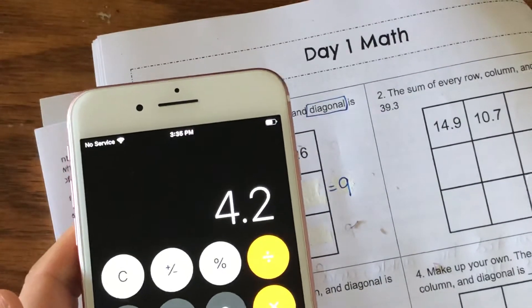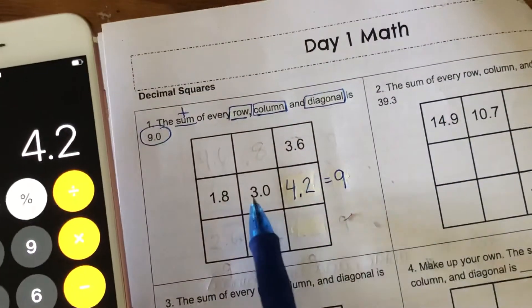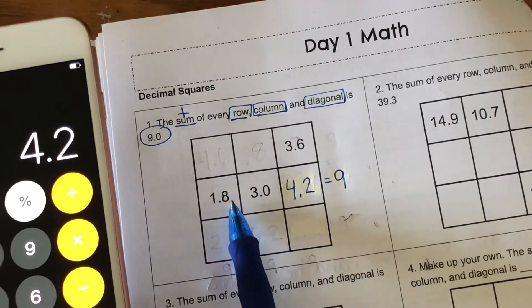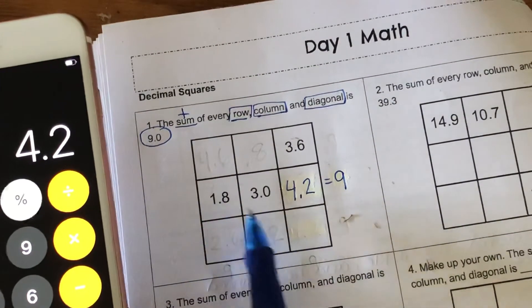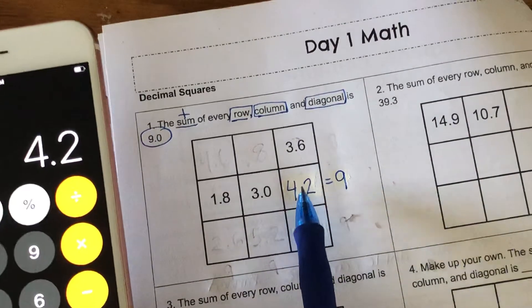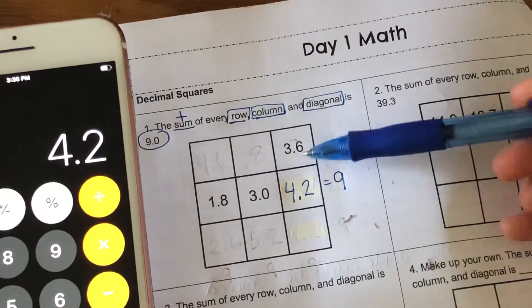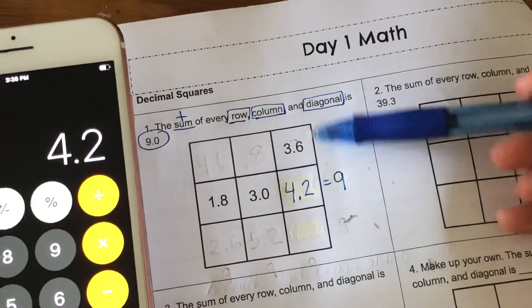I'm gonna go ahead and fill that in here, and I know that's correct because I added these two numbers together and took the sum of that away from 9 and got the difference. Now since I have these three done, I now have two of this column done, so I'm gonna go ahead and go down this way.